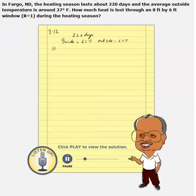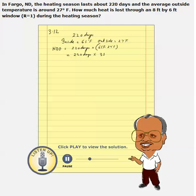Therefore, heating degree days can be calculated like this: 220 days times 65 minus 27 degrees Fahrenheit. That is 220 days times 38 degrees Fahrenheit, which is equal to 8,360 degree days.